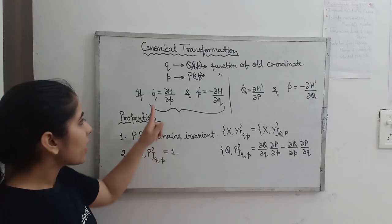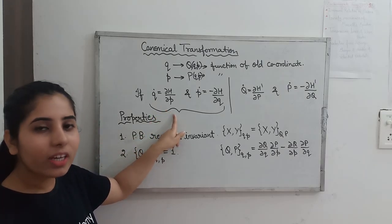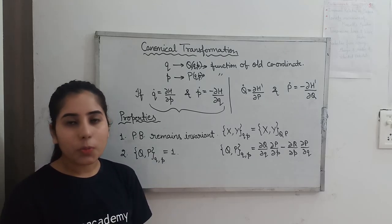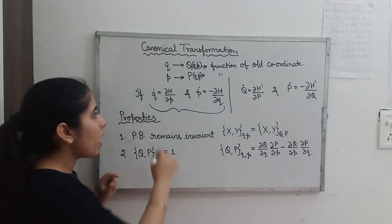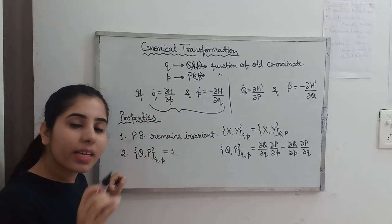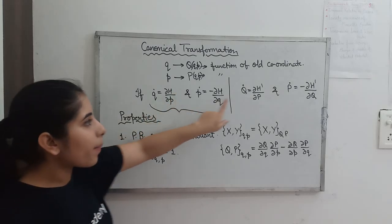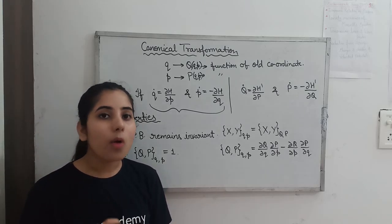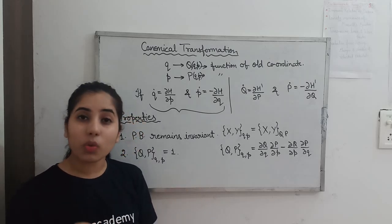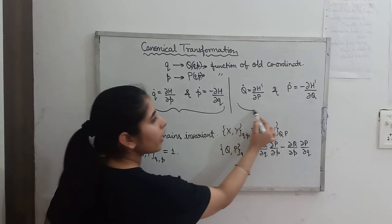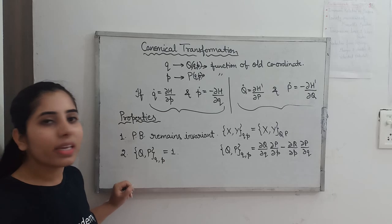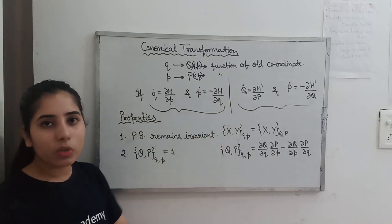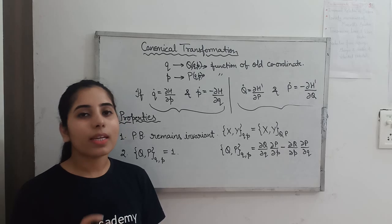Hamilton's equation of motion is written corresponding to the old coordinates, and the same form is written for the new coordinates. Both forms are the same equations but in different coordinates. Here H becomes H' — the Hamiltonian can change — but we are talking about the form of Hamilton's equation. When the form of Hamilton's equation of motion remains the same after transformation, we say that this is a canonical transformation.